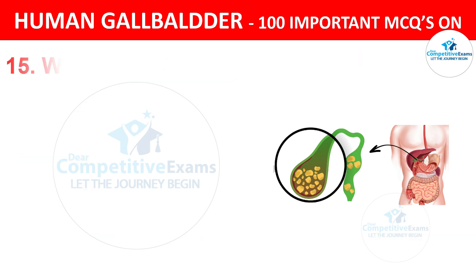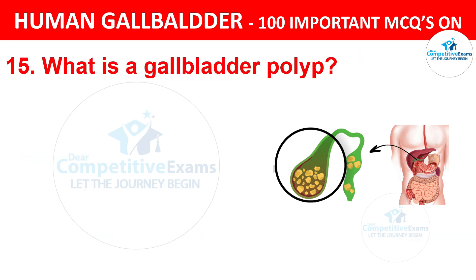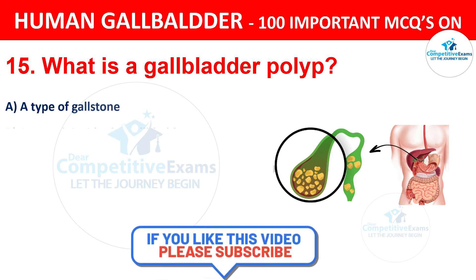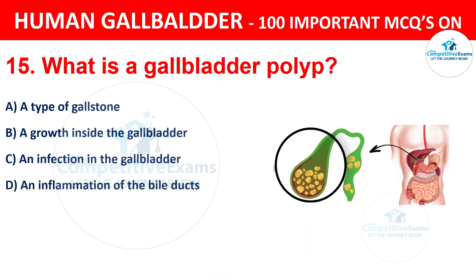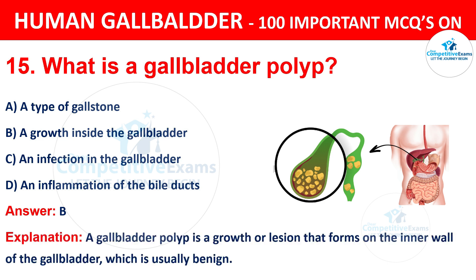Question 15: What is a gallbladder polyp? Options are: A) A type of gallstone, B) A growth inside the gallbladder, C) An infection in the gallbladder, D) An inflammation of the bile ducts. The correct answer is B, a growth inside the gallbladder. A gallbladder polyp is a growth or lesion that forms on the inner wall of the gallbladder, which is usually benign.